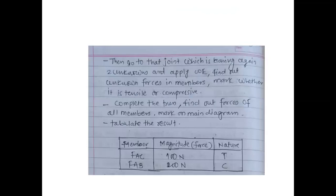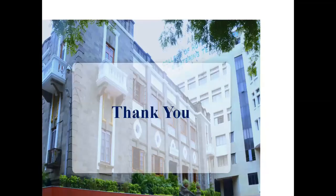We will go to that joint which is having only two unknowns. Then draw the free body diagram of that joint, apply conditions of equilibrium, and find out the unknown force of that member. Again go to the joint which is having two unknowns and apply conditions of equilibrium. Find out unknown forces in the members and mark whether it is tensile or compressive. Complete the truss and find out the forces of all members. Mark on the main diagram and tabulate the result — listing all members, their magnitude, and their nature. If the force is coming towards your joint, it is compressive; if it is going away from your joint, it is tensile. That's all from my side. Thank you very much. Keep learning and happy learning.